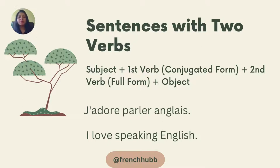For example: j'adore parler anglais, meaning I love speaking English. Here, j' is my subject, adore is the first verb which I have conjugated according to the subject, parler is the second verb kept in its full infinitive form (meaning to speak), and anglais is my object. You can make various sentences this way, such as j'adore parler indi.